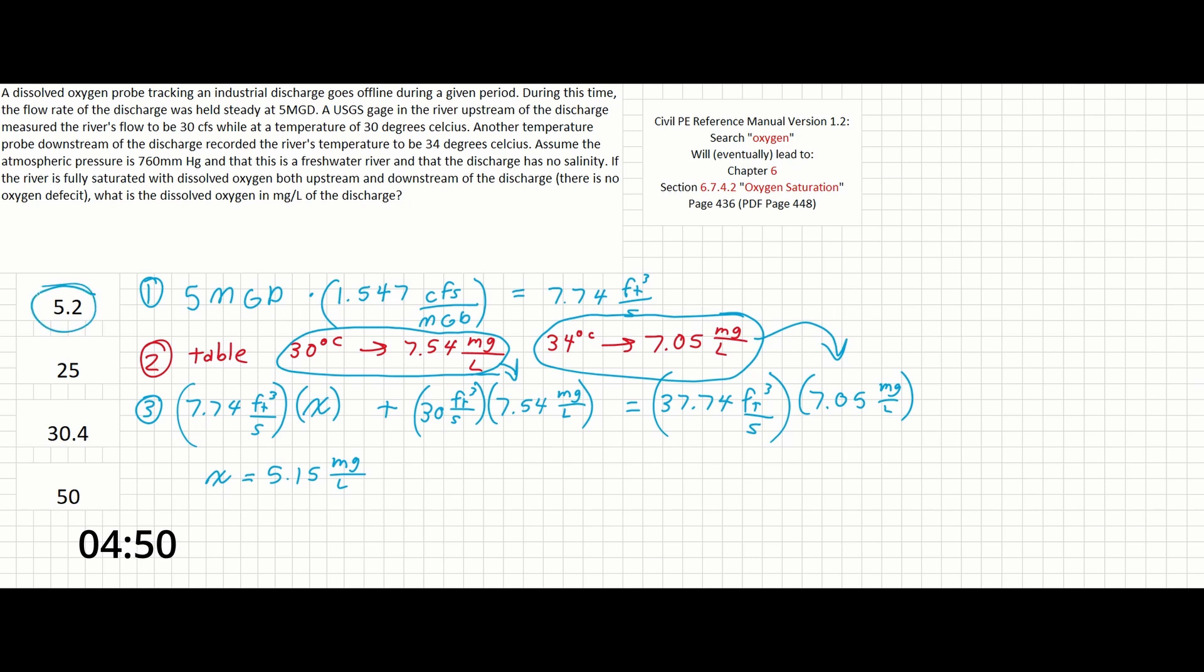I should note that in this problem, if you solve in terms of temperature first, you're going to find that the temperature of the industrial discharge is higher than the upper limit of what the table covers, about 50 degrees. This is an answer on the test, which you might pick if you aren't paying close attention to your units. That's why we use the table for our known temperatures instead, 30 and 34 degrees, and then solved for DO directly after that, using their corresponding values in the mass balance equation instead.